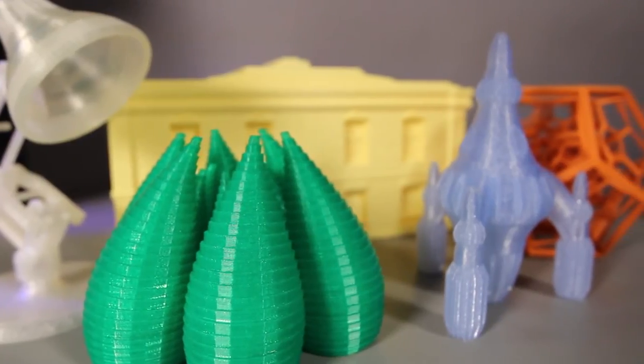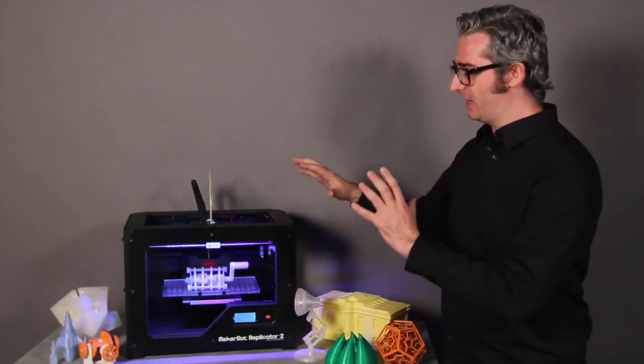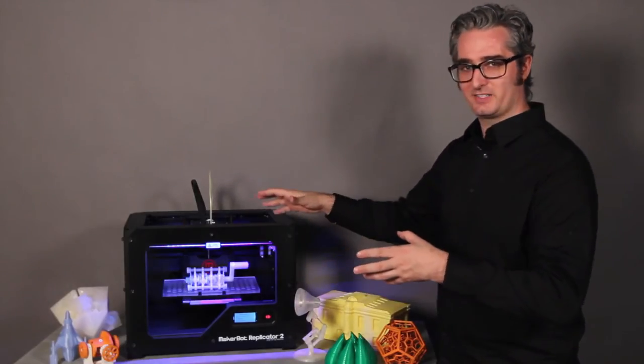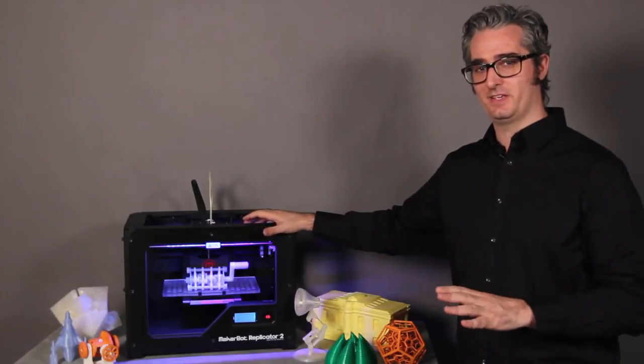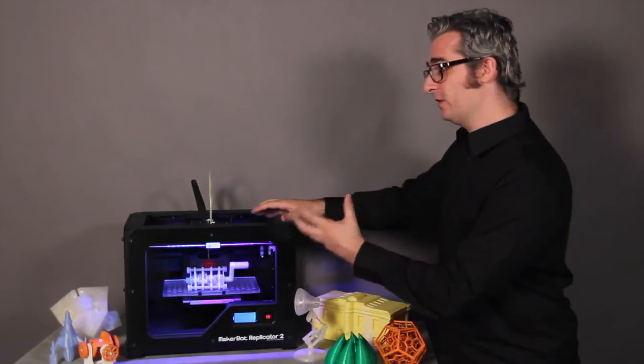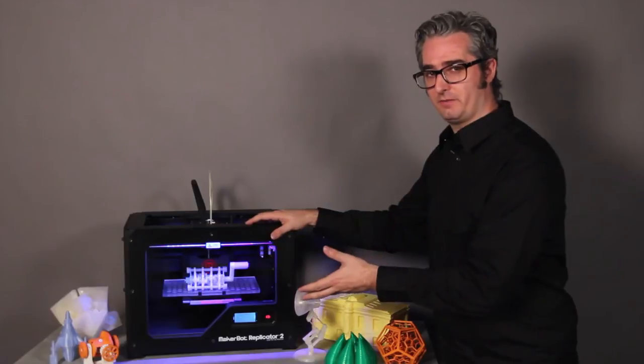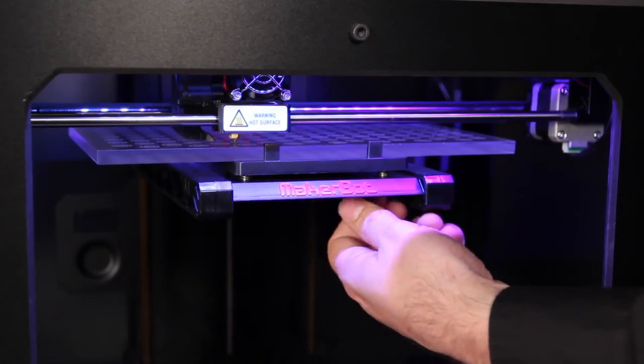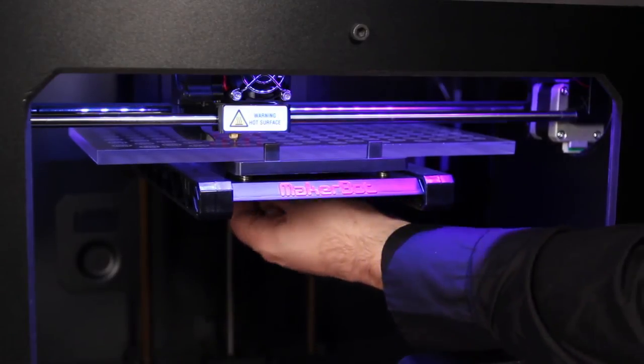The MakerBot Replicator 2 desktop 3D printer comes assembled, so you'll take it out of the box and you'll be making in minutes. It also comes equipped with a new, easy-to-use 3-point leveling system, so that you can level your build platform quickly, easily, and with more precision.